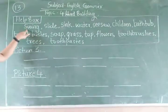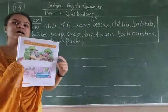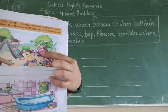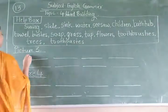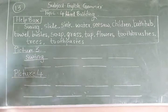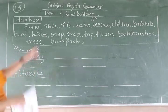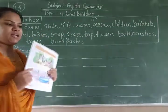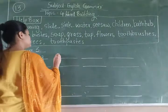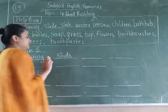The first word: S-W-I-N-G — swing. Swing belongs to the garden picture, picture number 3. Swing means jhula and you can see the girl is using the swing. Write down swing in picture number 3. S-W-I-N-G, swing. Next one: S-L-I-D-E — slide. Slide also belongs to picture number 3. S-L-I-D-E, slide.